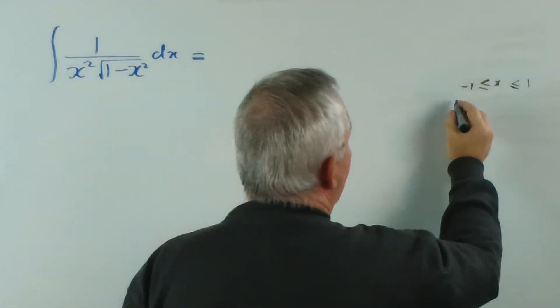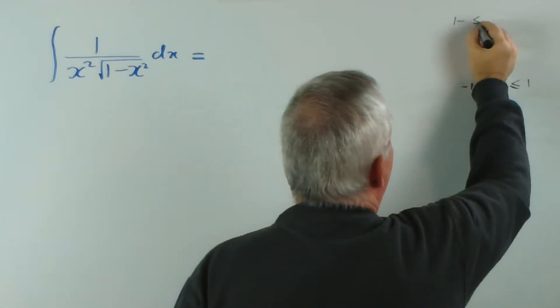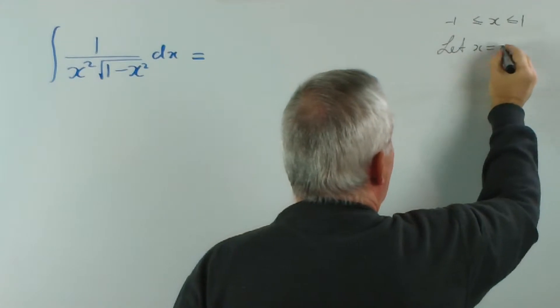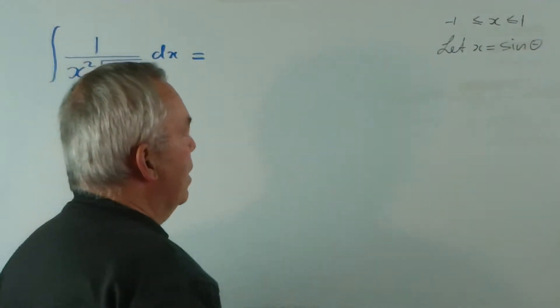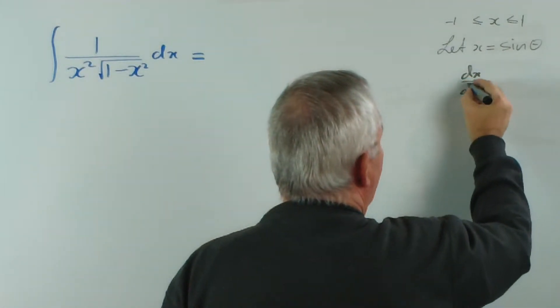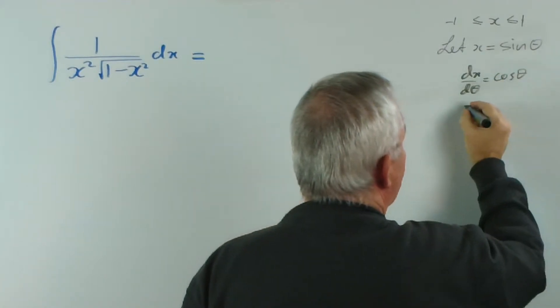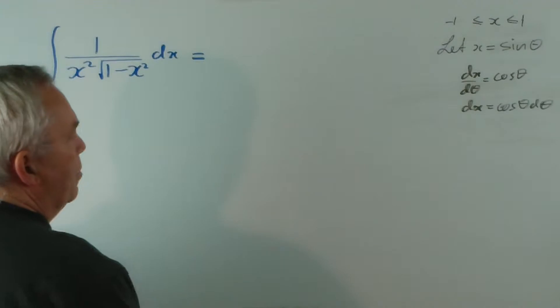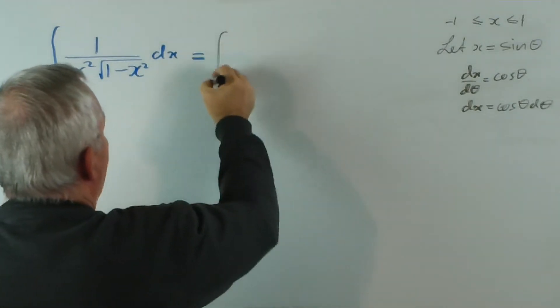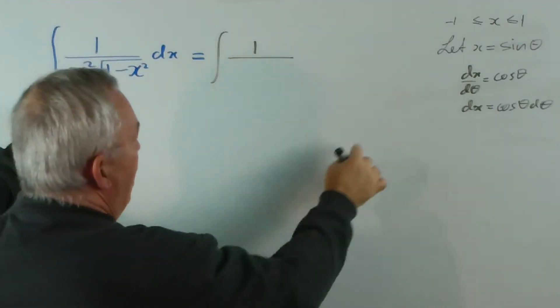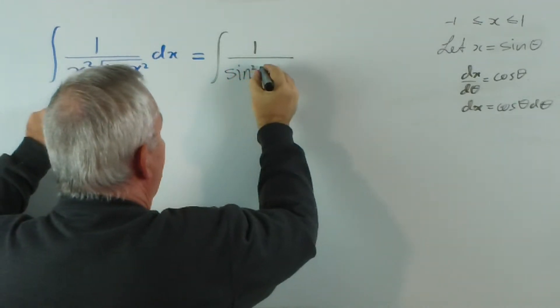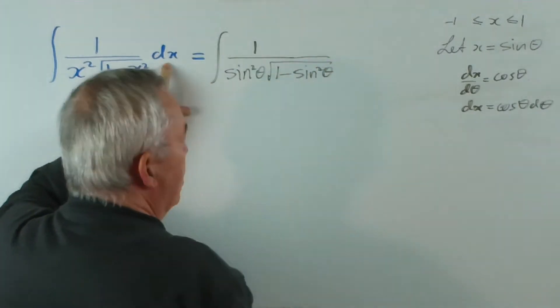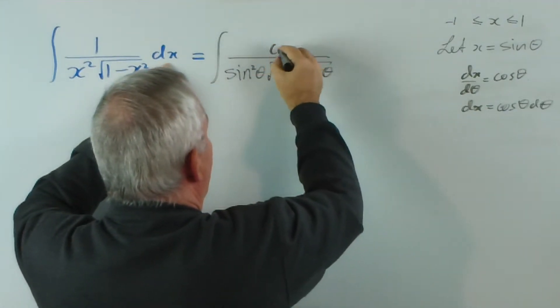Now we're going to substitute... I shouldn't have put this up higher. Let's do that. There we go. Now we're going to let x = sin θ. Now that means that dx/dθ will be cos θ. So dx will be cos θ dθ. So let's see now what we get. We get the integral of 1 over x² is going to be sin²θ, root 1 - sin²θ. And dx I'm going to replace with cos θ dθ. I'll just write that on the top. cos θ dθ.